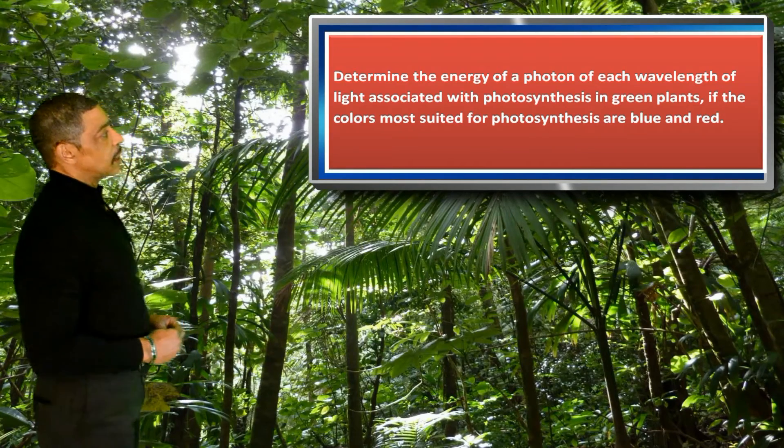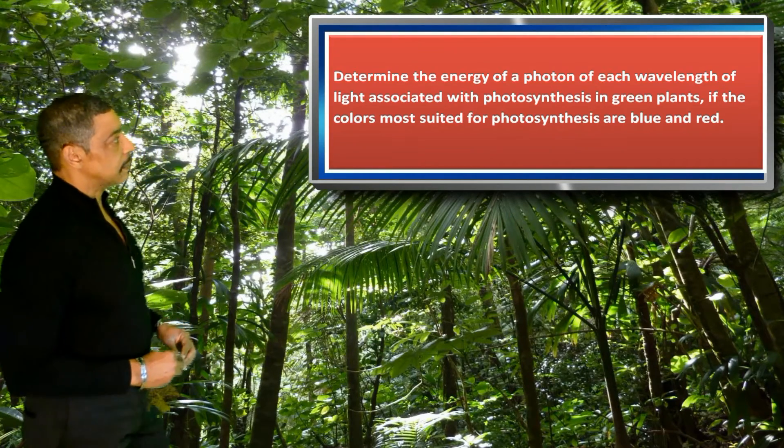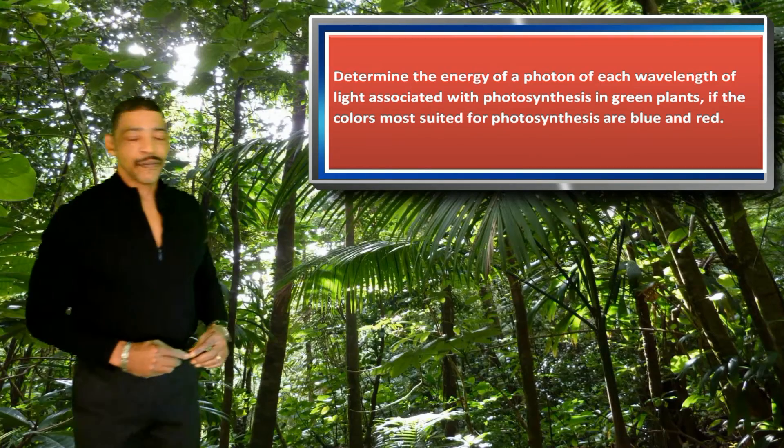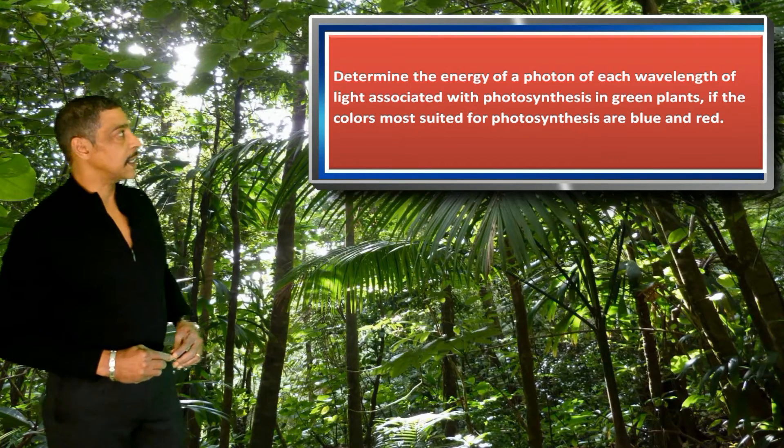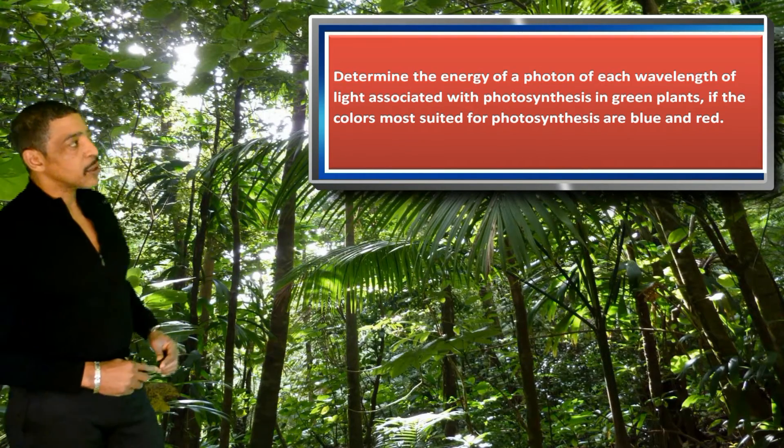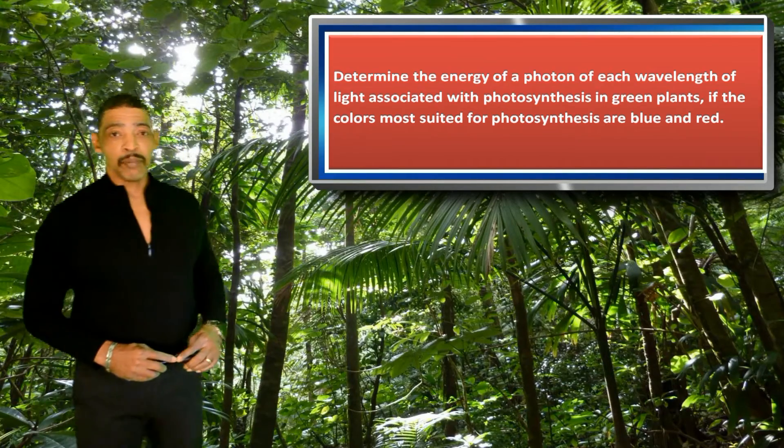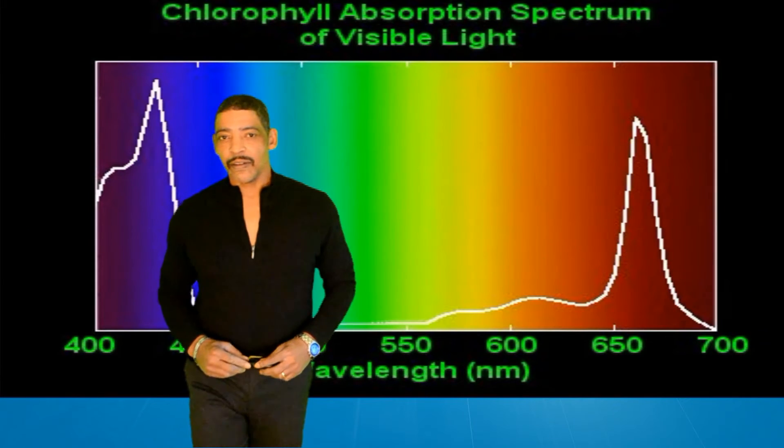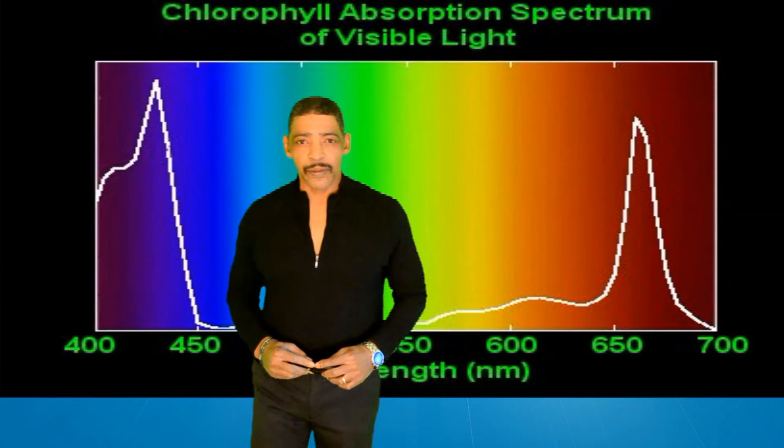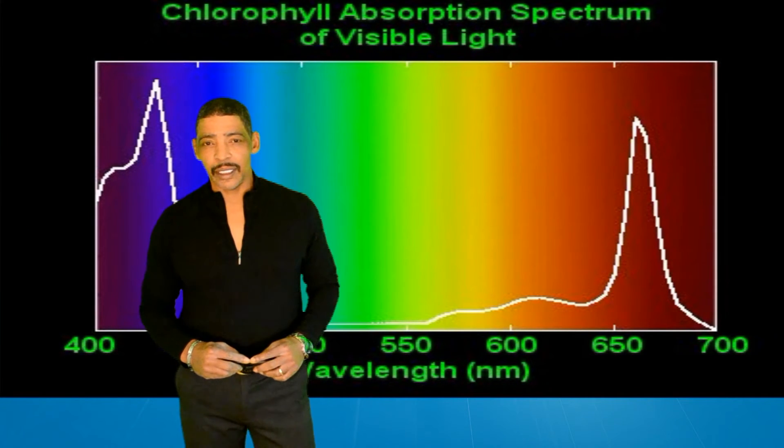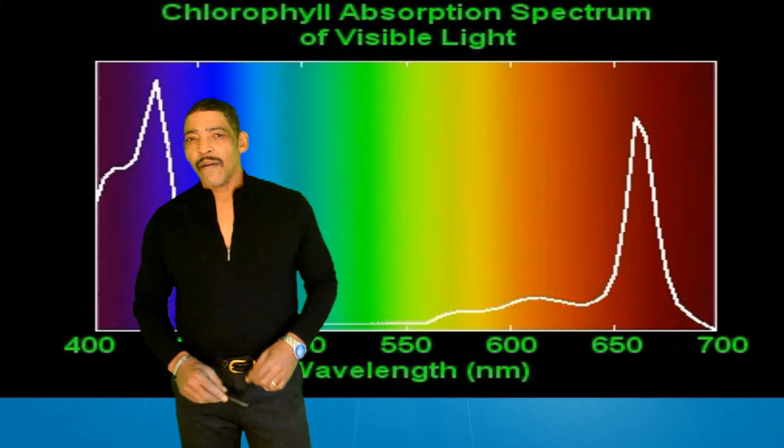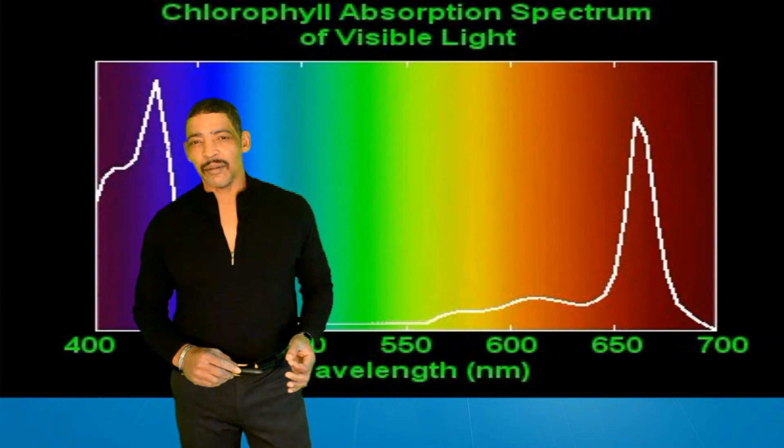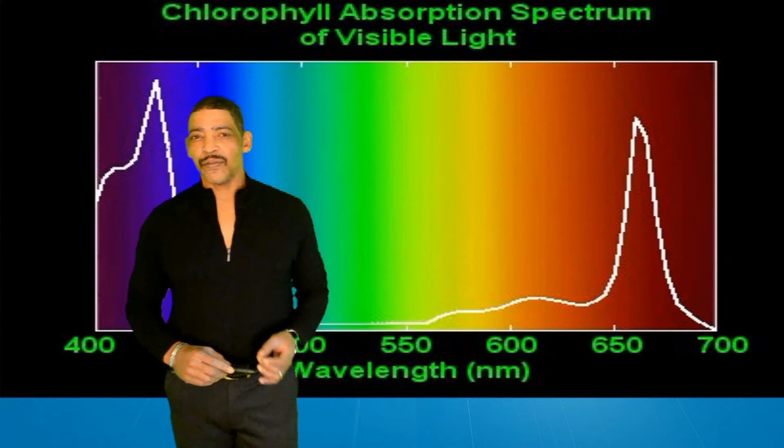Consider the following practice problem. Determine the energy of a photon of each wavelength of light associated with photosynthesis in green plants, if the colors most suited for photosynthesis are blue and red. The wavelengths of light best absorbed by chlorophylls A and B in green plants are around 425 nanometers and 650 nanometers.